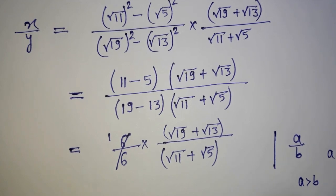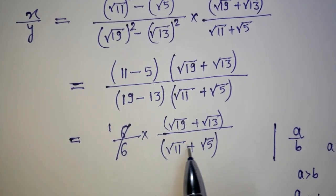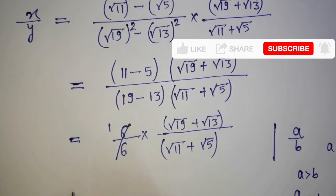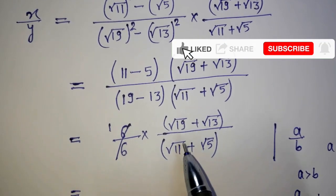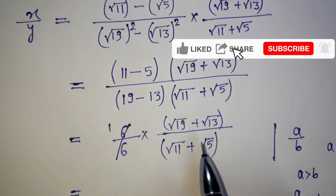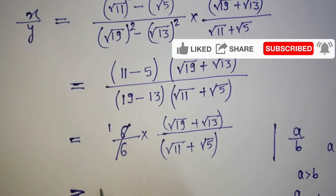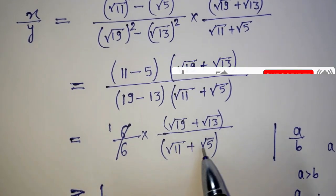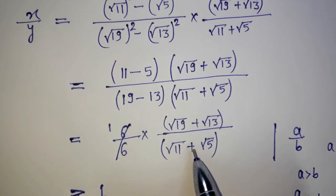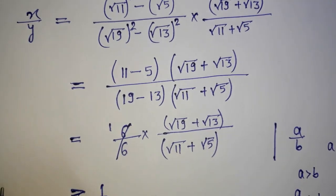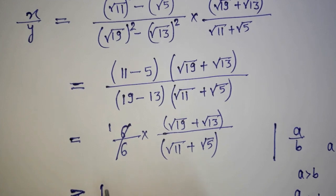So obviously this value is greater than 1. We can say that root 19 plus root 13 divided by root 11 plus root 5 is greater than 1.